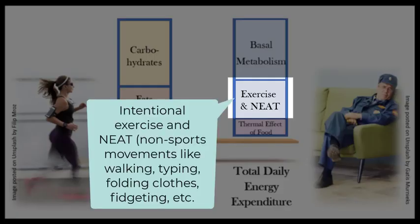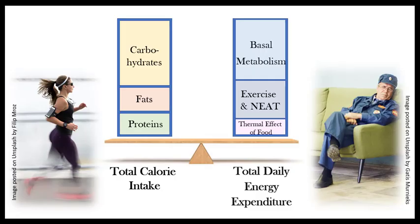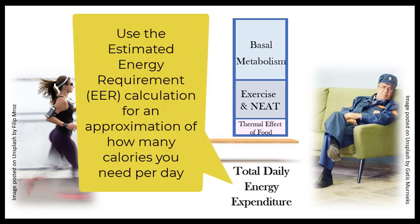Physical activity is the most variable. Picture a couch potato versus someone preparing for a triathlon and you'll get the idea. The calories expended can be determined for an individual in a laboratory, but it's much more convenient to simply make an approximation using the estimated energy requirement calculation — that's the EER that we've already done during this course.